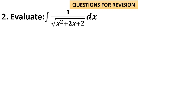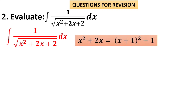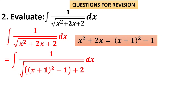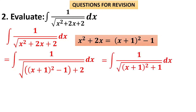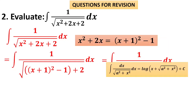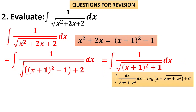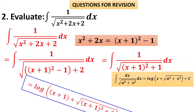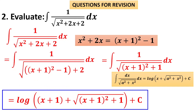Let us move on to ∫dx / √(x²+2x+2), a quadratic polynomial inside the square root. Using the same technique: write x²+2x as (x + 1)² − 1. Put it inside the integral sign: √((x+1)²−1+2) = √((x+1)²+1). This is of the a²+x² form with x replaced by (x+1). Therefore the answer is log(x+1 + √((x+1)²+1)) + c. There is no need to expand the square root back to x²+2x+2 in the exam.